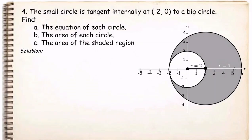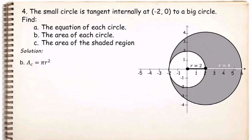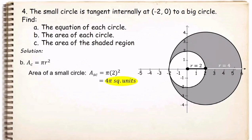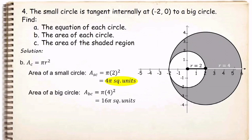For letter B, find the area of each circle. The area of a circle is equal to πr². Since we already have the value of r for each circle, we replace r with 2 for the small circle and 4 for the big circle. The area of the small circle is π × 2² = 4π square units. The area of the big circle is π × 4² = 16π square units.